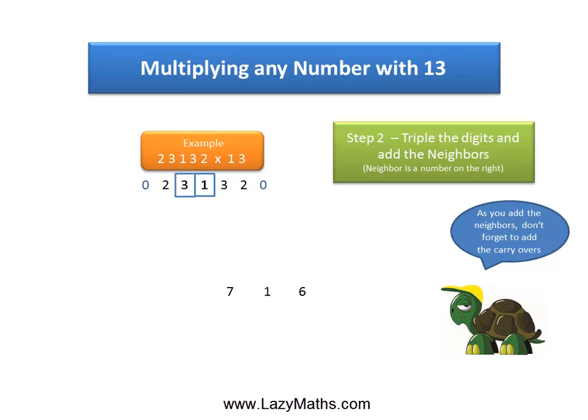Continuing with the next pair, 3 and 1: triple of 3 is 9 plus the 1 gives us 10. Again we write 10 with the 1 in the carryover position.